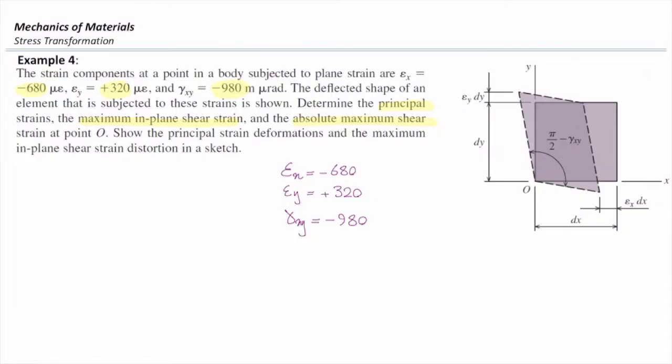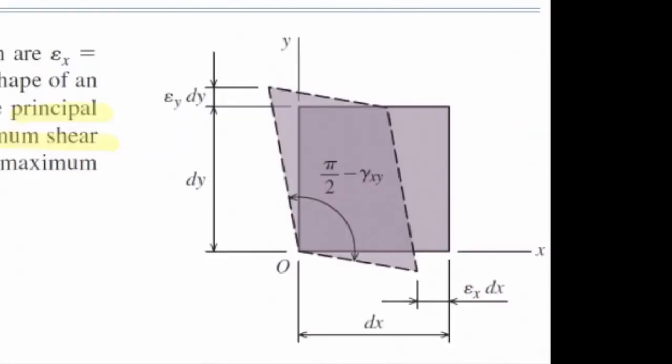The strain components at a point in a body subjected to plane strain are epsilon x equal to negative 680 micro epsilon, epsilon y equal to 320 micro epsilon, and gamma xy equal to negative 980 micro epsilon.